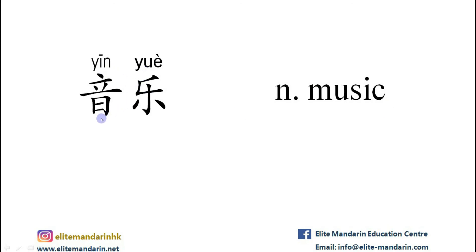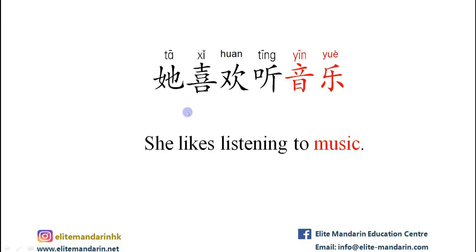音乐 — it means music. The example: 她喜欢听音乐。 她 (she), 喜欢 (like), 听音乐 (listen to music). She likes listening to music.